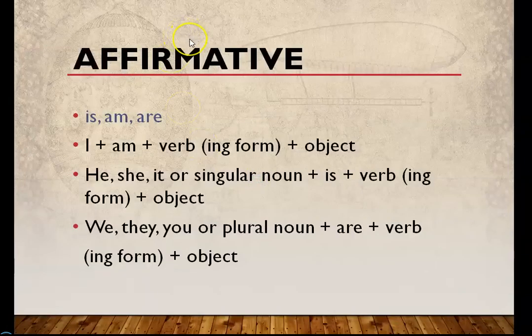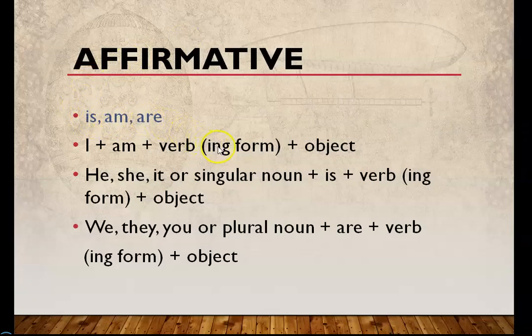Affirmative — a simple sentence. Present continuous tense always uses the helping verbs is, am, or are. And remember, it's a continuous tense, so we always use the ing form of the verb.